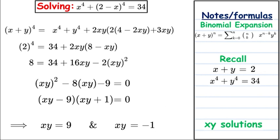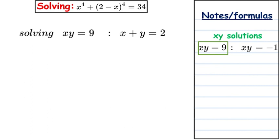We now take both sets into account. For the first set, xy equals 9 and x plus y equals 2. Rewriting y in terms of x gives y equals 9 over x. Substituting into x plus y equals 2, we get x plus 9 over x equals 2, which rearranges to a quadratic after multiplying through by x.